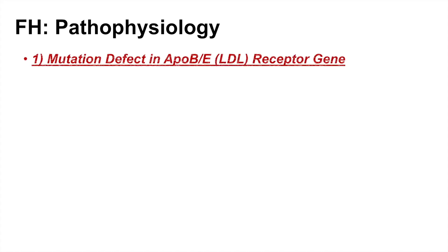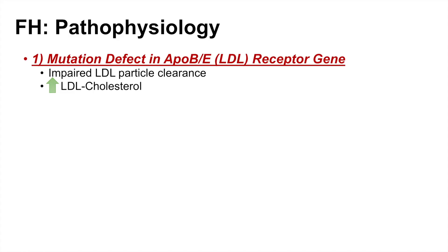The pathophysiology of familial hypercholesterolemia is all about mutations. As an autosomal dominant condition, there are several mutations that can lead to this. One is a mutation defect in the ApoB/E or LDL receptor gene, which leads to impaired LDL particle clearance and an overall increase in LDL cholesterol levels.